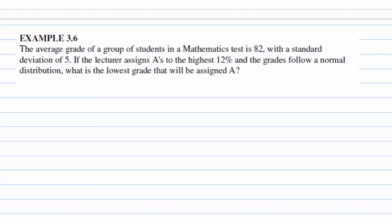The average grade of a group of students in a mathematics test is 82, with a standard deviation of 5. If a lecturer assigns A to the highest 12% and the grade follows a normal distribution, what is the lowest grade that will be assigned A?